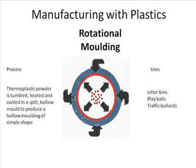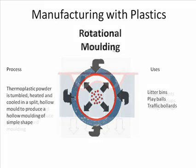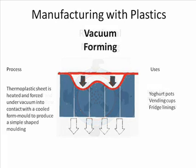Rotational moulding: a thermoplastic powder is tumbled, heated and cooled in a split hollow mould to produce a hollow moulding of a simple shape. Litter bins, balls and traffic bollards are examples.